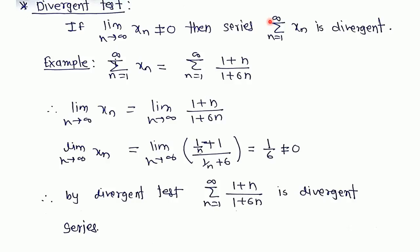For example, if we have a series Xn equals 1 plus n upon 1 plus 6n, if we take the limit of this series, then we get 1 by 6, which is not equal to 0. Then by the divergent test, this series is divergent because the necessary condition is not satisfied. That is, the limit of the nth term of the series is not equal to 0, therefore the series is divergent.